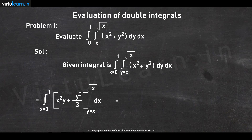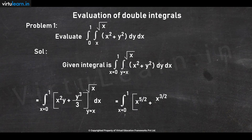This becomes ∫₀¹ of the following expression. Substituting the upper limit gives x^(5/2) + x^(3/2)/3. Then substituting the lower limit gives, with a negative sign, minus x³ minus x³/3, dx.